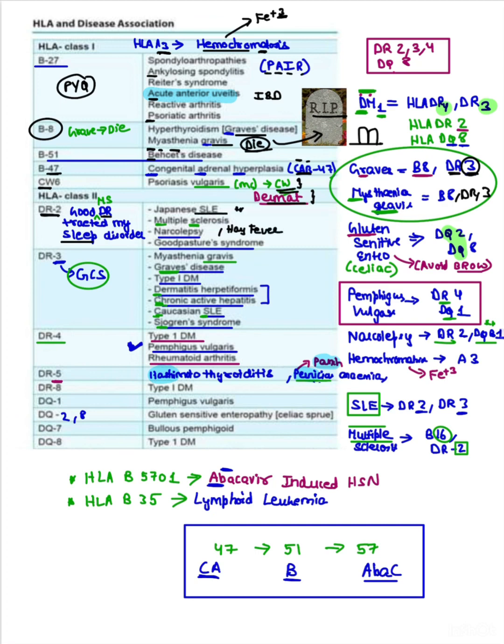Now coming to DR3. Remember three letters: Glasgow Coma Scale, GCS. G for Graves disease. We already done guys, Graves is associated with DR3 because it's B8 also and this can be made as a 3 also. C for chronic active hepatitis, C for Caucasian SLE, and S for Sjögren syndrome. This was all about HLA-DR3.